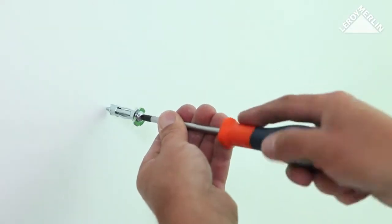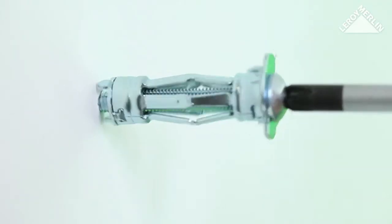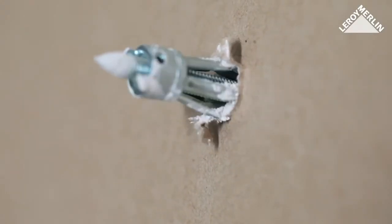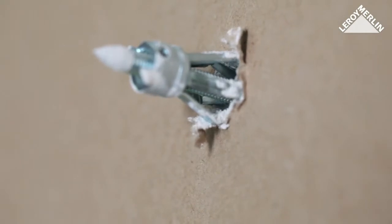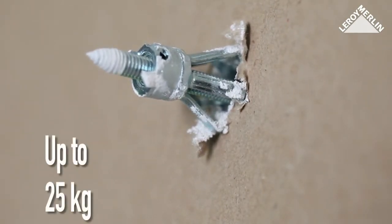For self-drilling cavity fixing anchors, screw the plug and its screw directly into the wall. Turning the screw drills the plug into the plasterboard. When fully inserted, keep screwing to open the wings behind the wall. This anchor system will support 25 kg of vertical load.